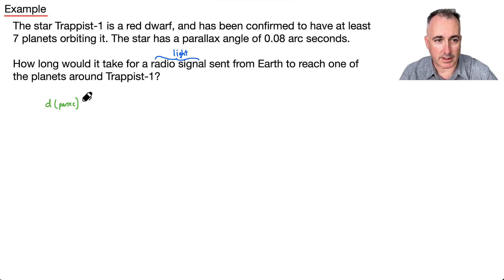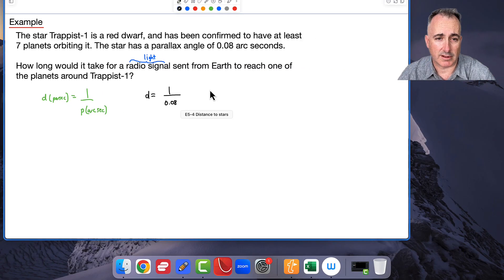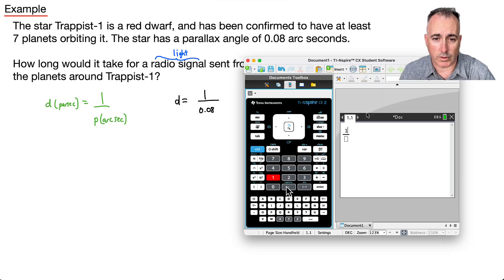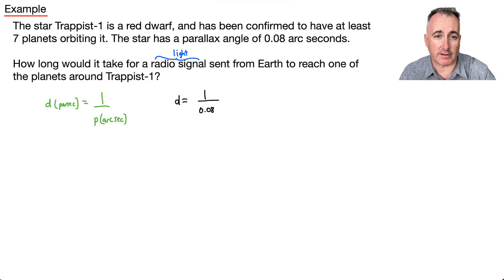So let's use our equation. The distance in parsecs equals one over p, which is the parallax angle in arc seconds. Do we have any converting to do? We actually don't. So we're going to have our distance, and it's just going to be one over the angle, which is 0.08. That's all we have to do. I'll open up a trusty calculator and calculate this. I'll do a fraction: one over 0.08, and I end up with 12.5. So my answer is 12.5. But the question is 12.5 what? Well this told me the answer in parsecs.